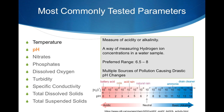pH is a measure of acidity or alkalinity using the concentration of hydrogen ions. The preferred range of pH for a healthy aquatic system is 6.5 to 8, but some organisms can survive in a pH as low as 4.5 and as high as 10. The two most common sources of increased acidity in the eastern United States are acid mine drainage and acid rain.